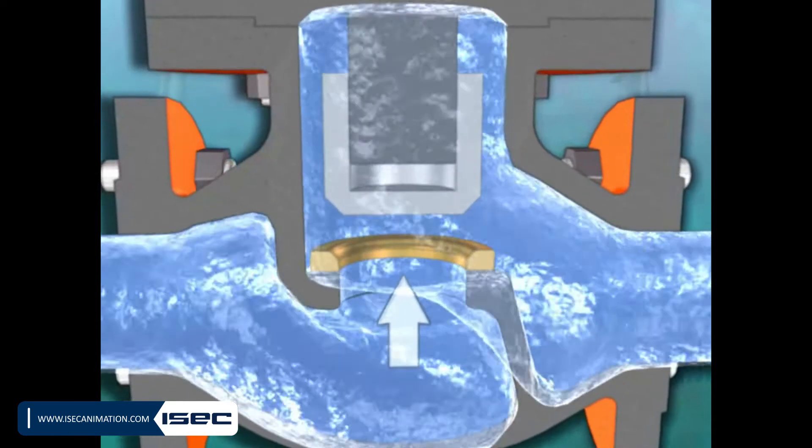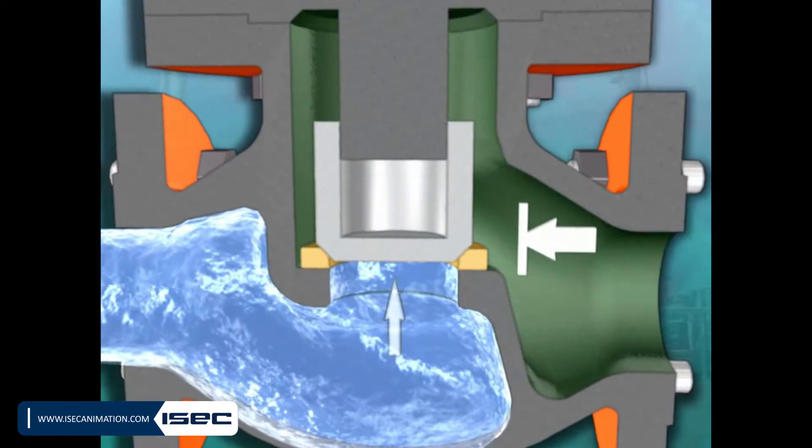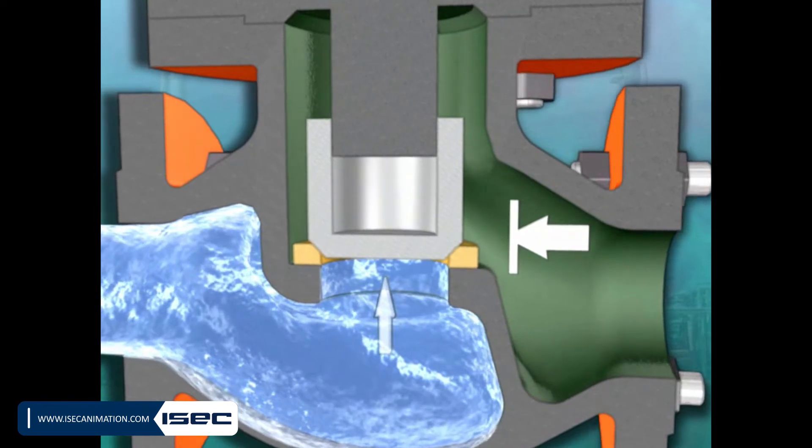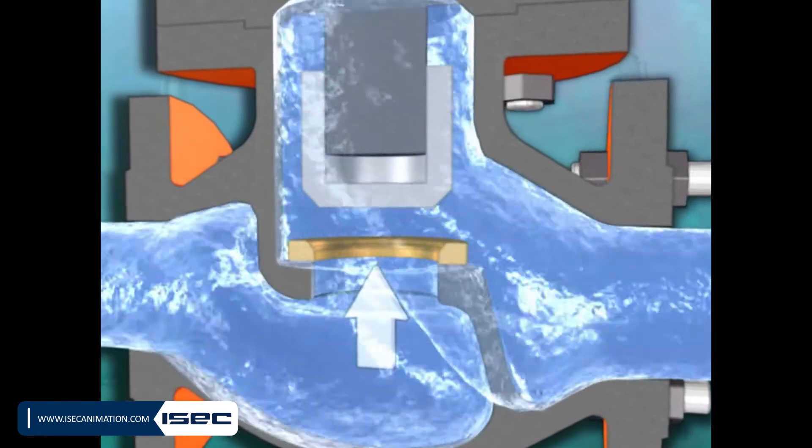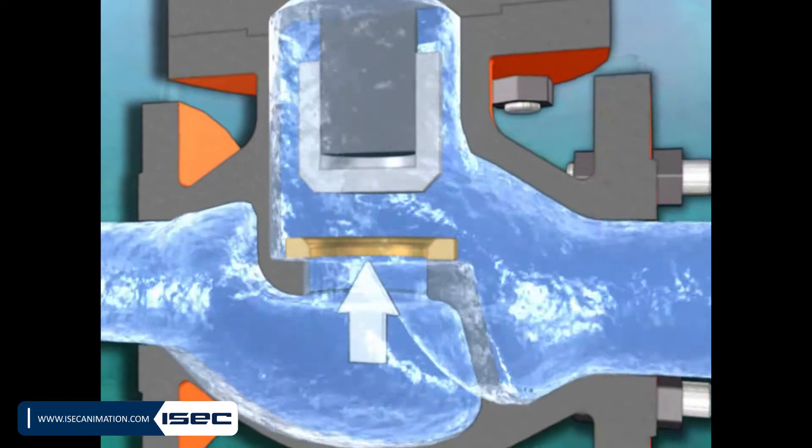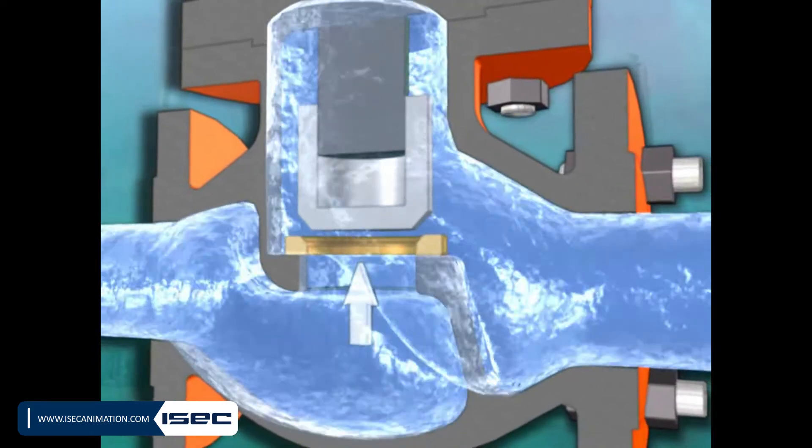This valve is recommended for use on steam, air, gas, and water pipelines. The main parts of the valve are body, bonnet, disc, and seat.